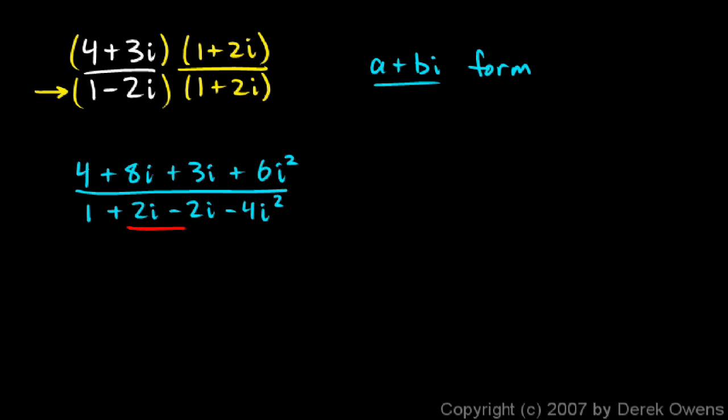Now look what happened right here. When I multiply my denominators, I'm multiplying two complex conjugates. So the imaginary part ends up canceling out. So let's simplify this fraction a little bit. This is going to equal 4 plus 11i plus 6 times i squared. And the i squared, remember, is negative 1.